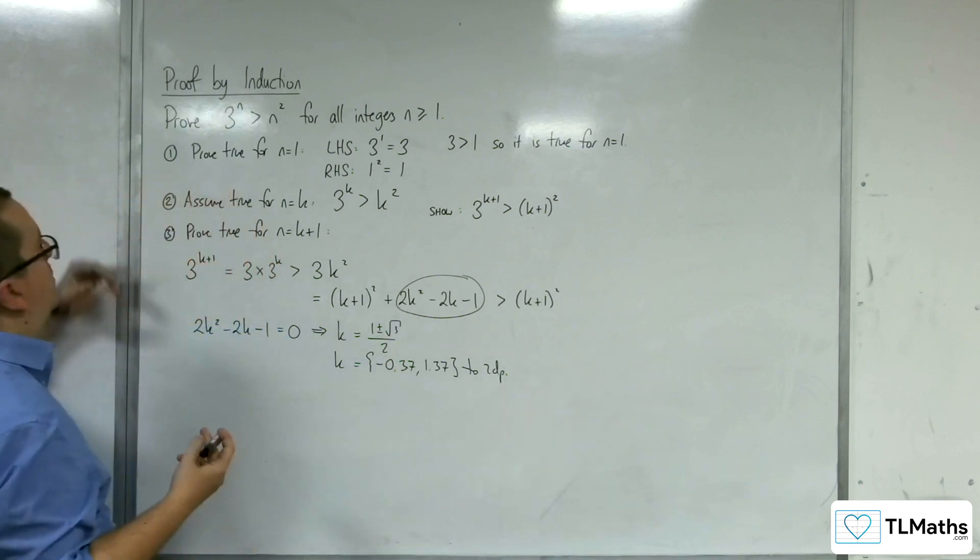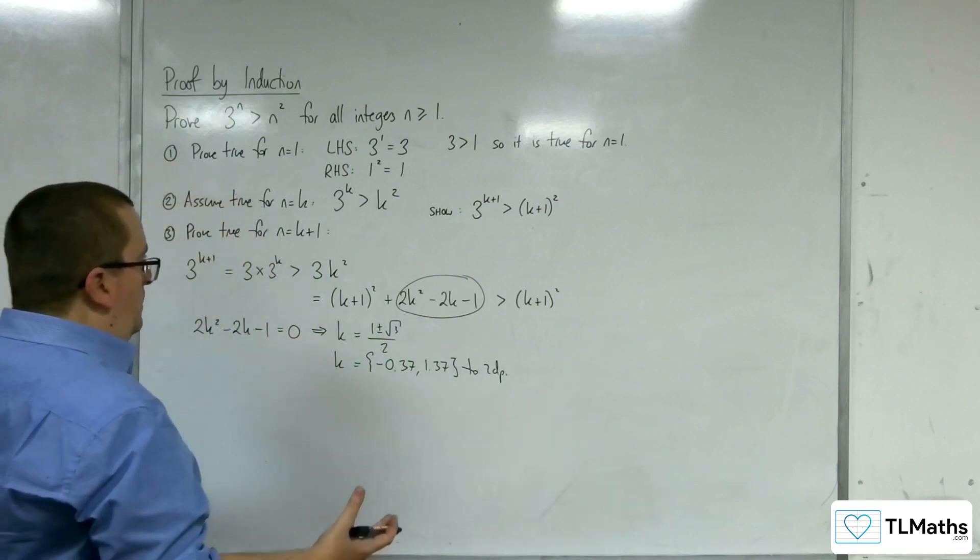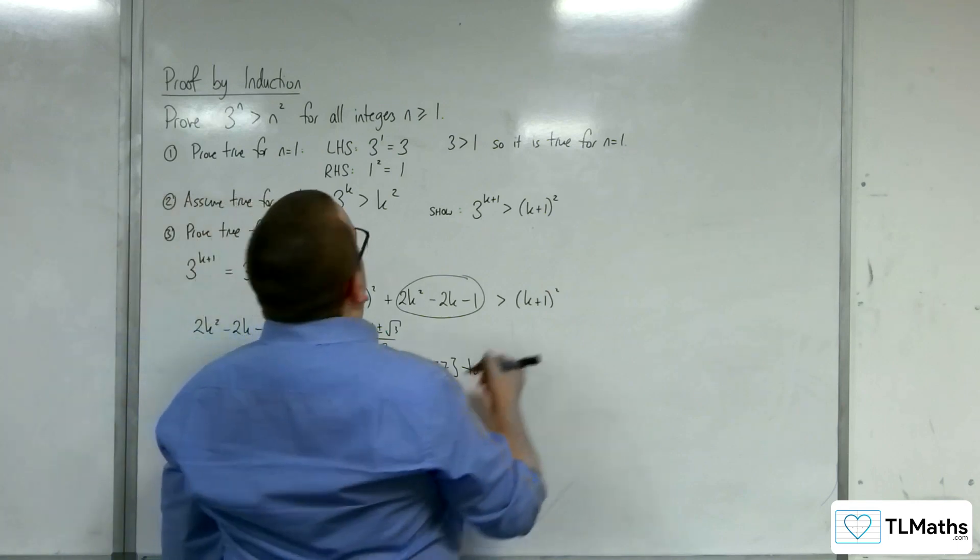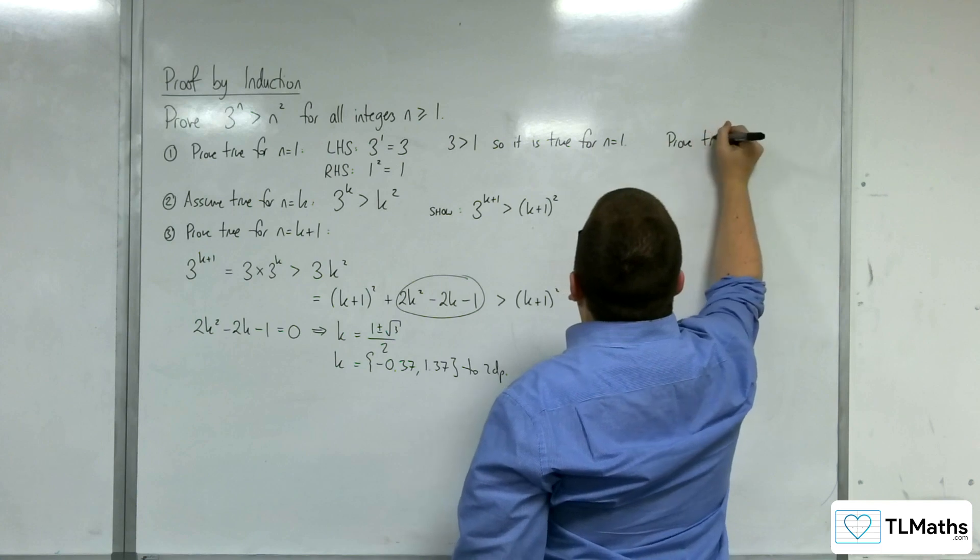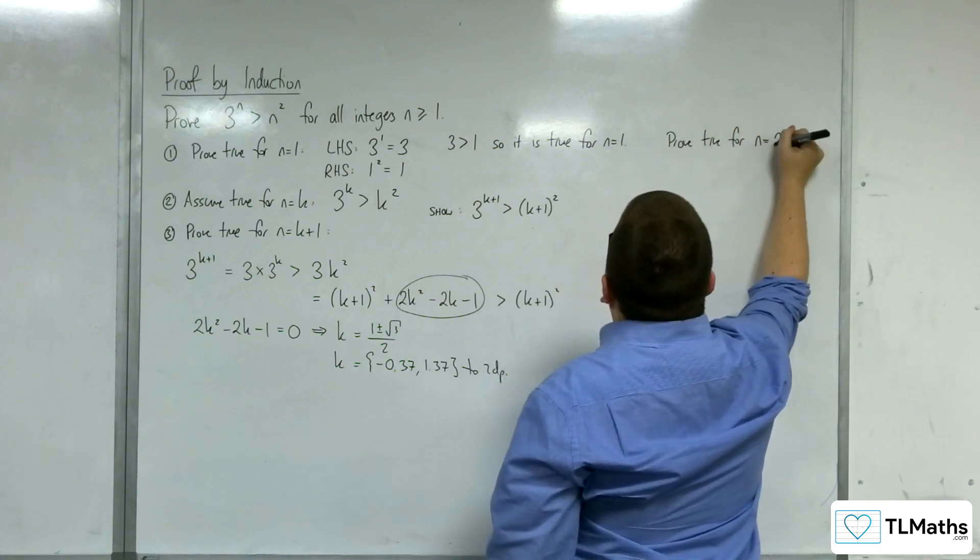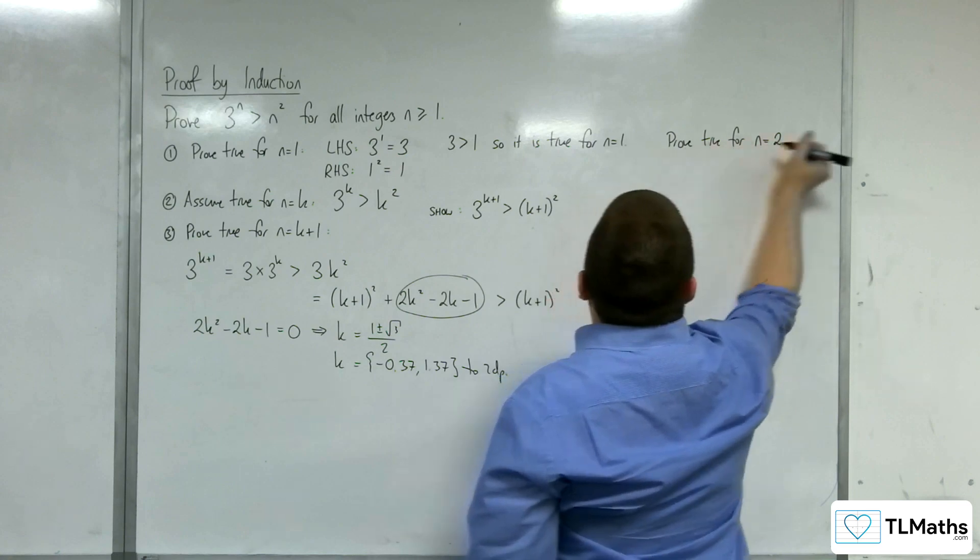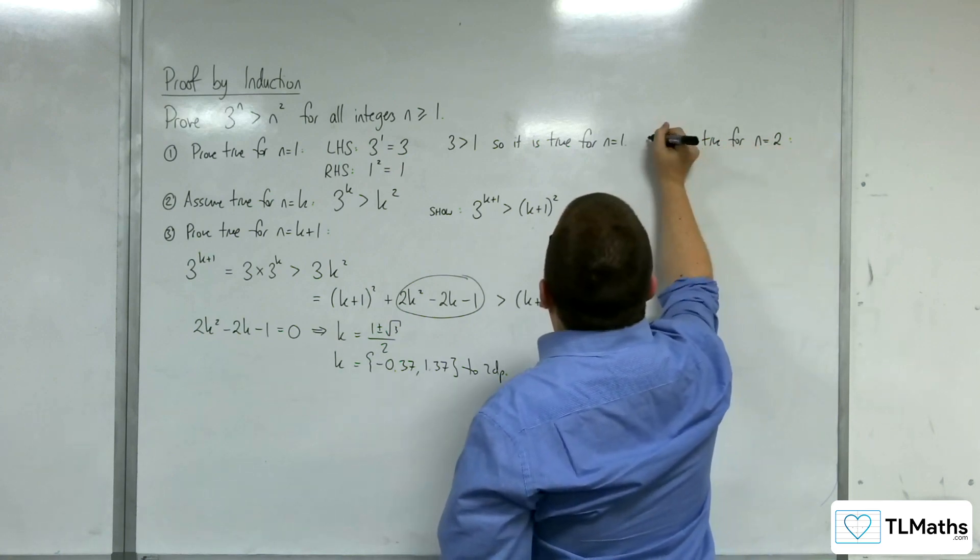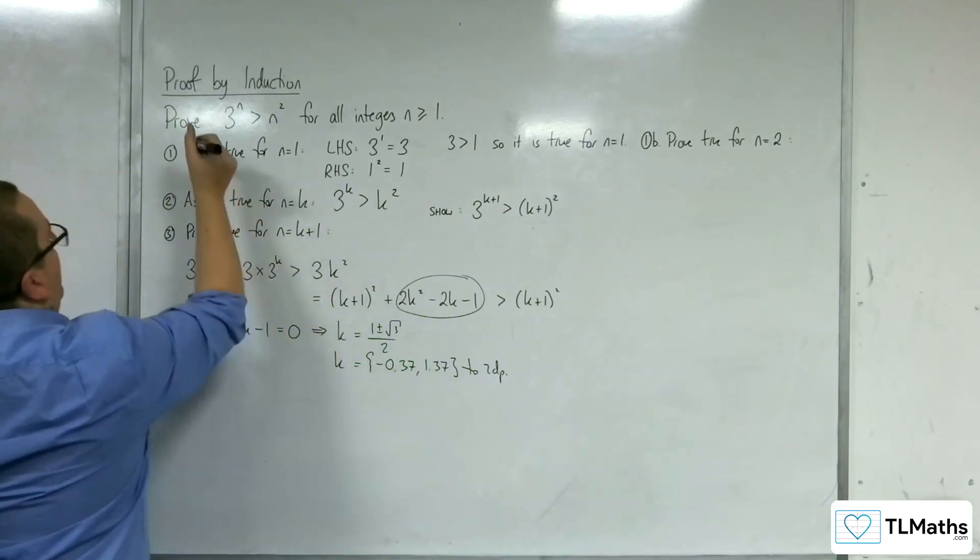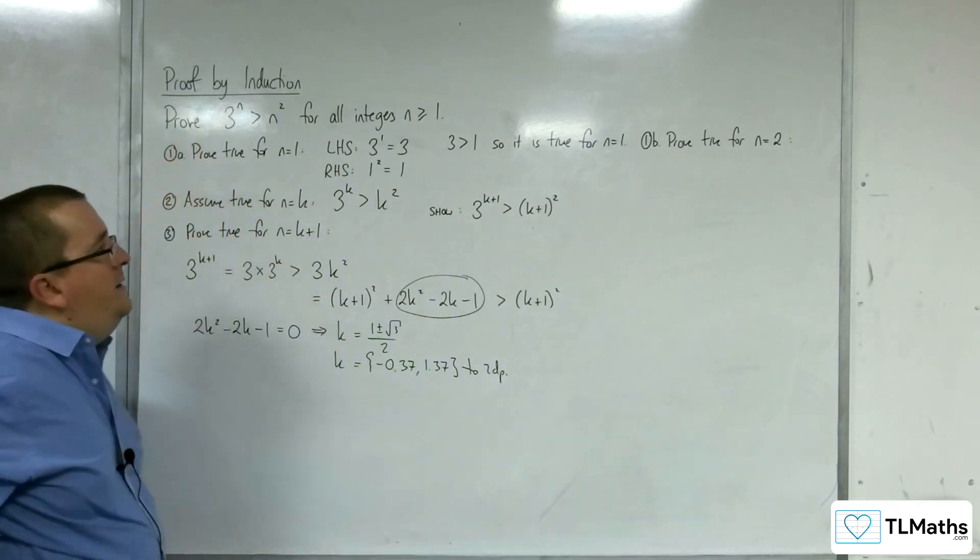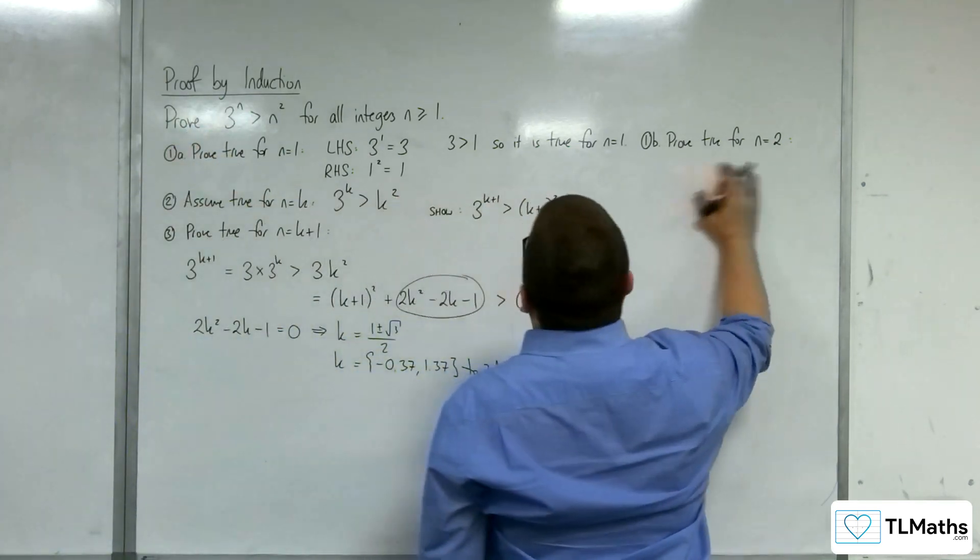So we need to also prove true for n equals 2. So up here, let's do prove true for n equals 2. So let's call it 1 part b and that one part a. So prove true for n equals 2.